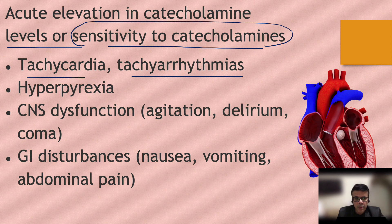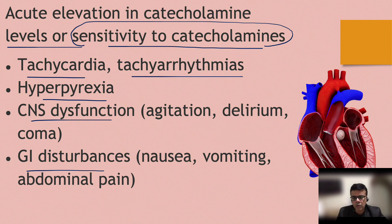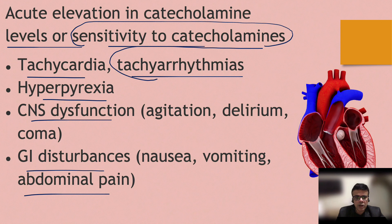In thyroid storm, cardiac dysfunction promptly occurs. The patient may have hyperpyrexia — a persistently high fever. CNS dysfunction is also seen in many patients, with agitation and altered sensorium. GI disturbances may be seen in the form of nausea, vomiting, and abdominal pain. These are the cardinal manifestations, of which cardiac arrhythmias in particular may prove fatal to the patient.